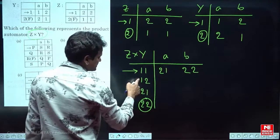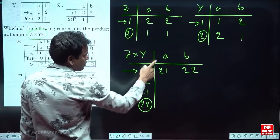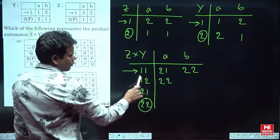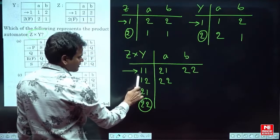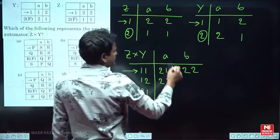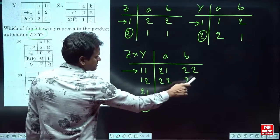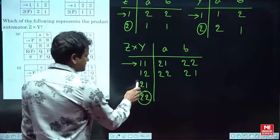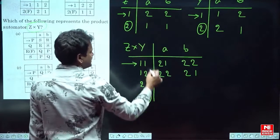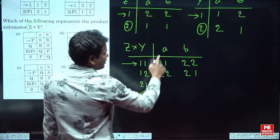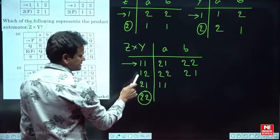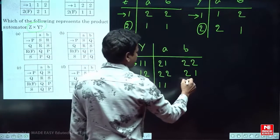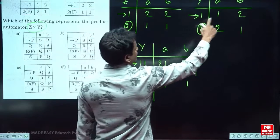For state 1,2: the first element belongs to Z — state 1 on A goes to 2 — and the second belongs to Y — state 2 on A goes to 2. Then for 1,2 on B: from Z, state 1 on B gives 2; from Y, state 2 on B gives 1. So 1,2 on B goes to 2,1.